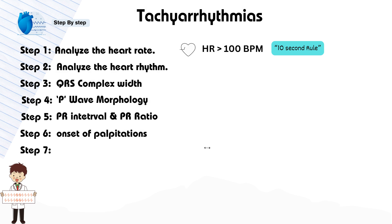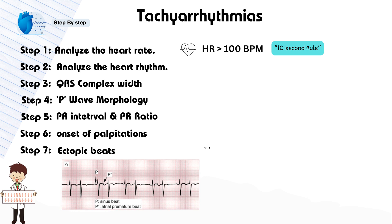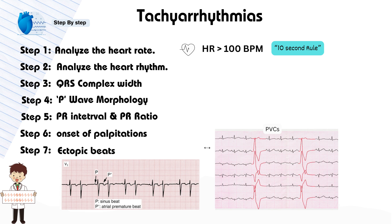Now let's discuss ectopic beats with examples. For supraventricular ectopic beats, or SVEBs, consider an ECG showing premature QRS complexes, often occurring in groups — this suggests atrial irritability and may signal a higher risk. For ventricular ectopic beats, an ECG displaying wide and bizarre QRS complexes following a normal beat could indicate the presence of ventricular ectopics.